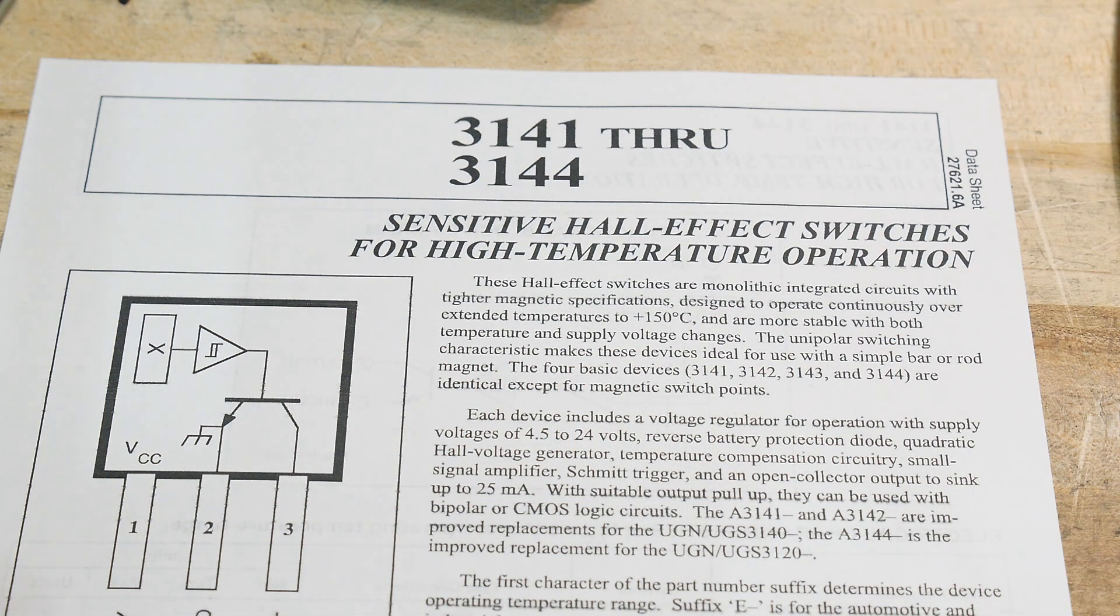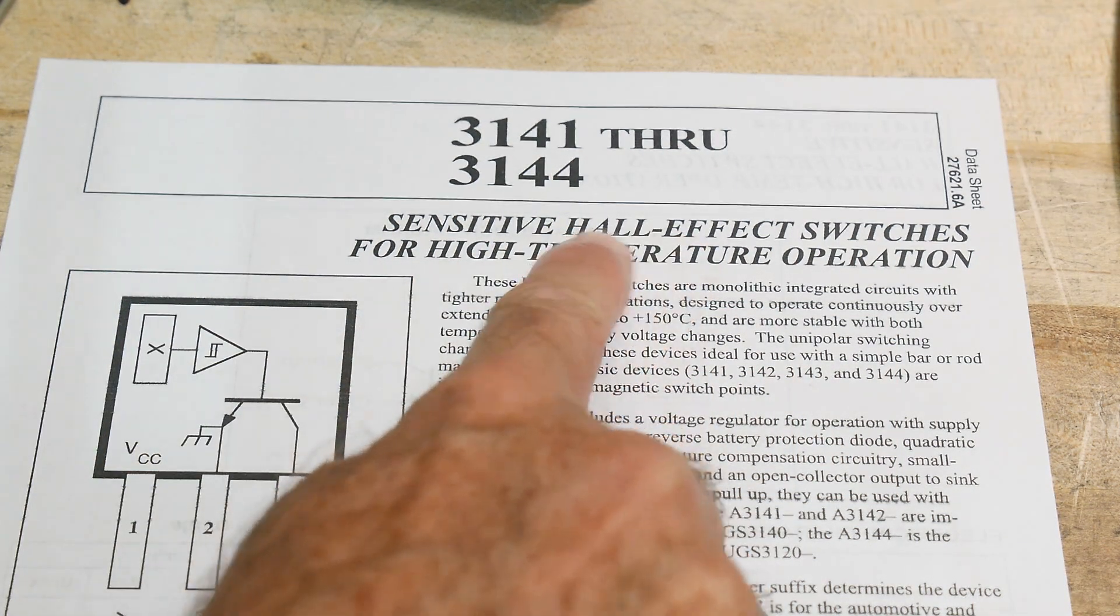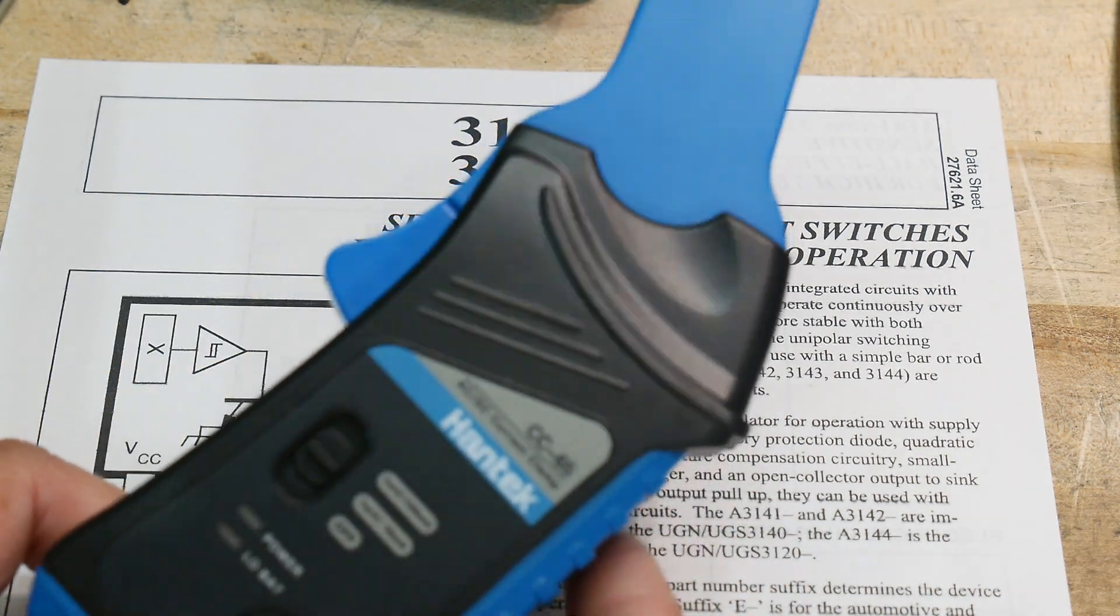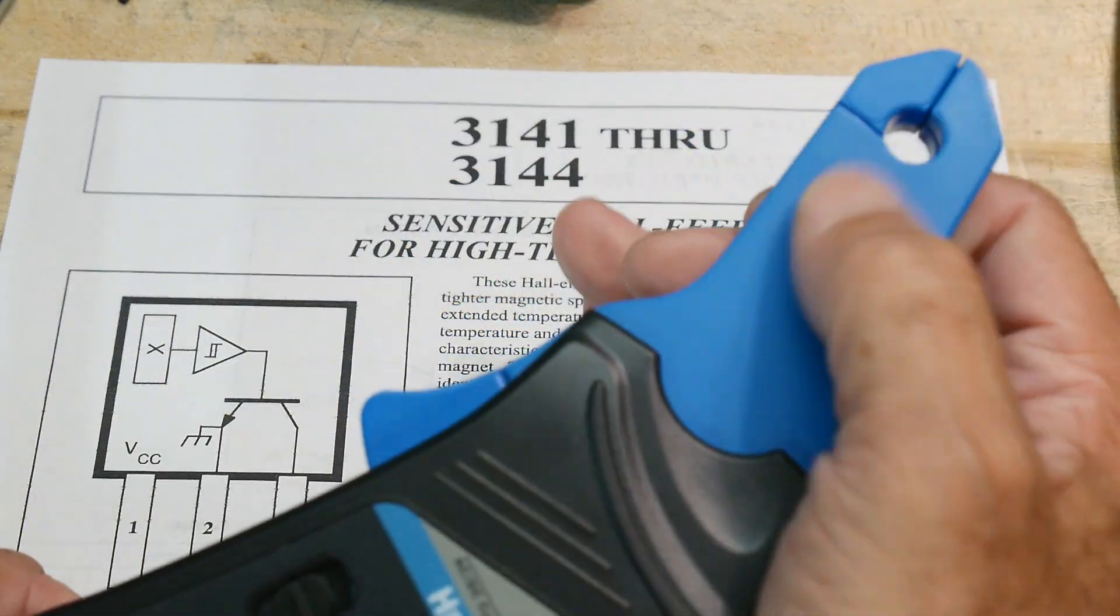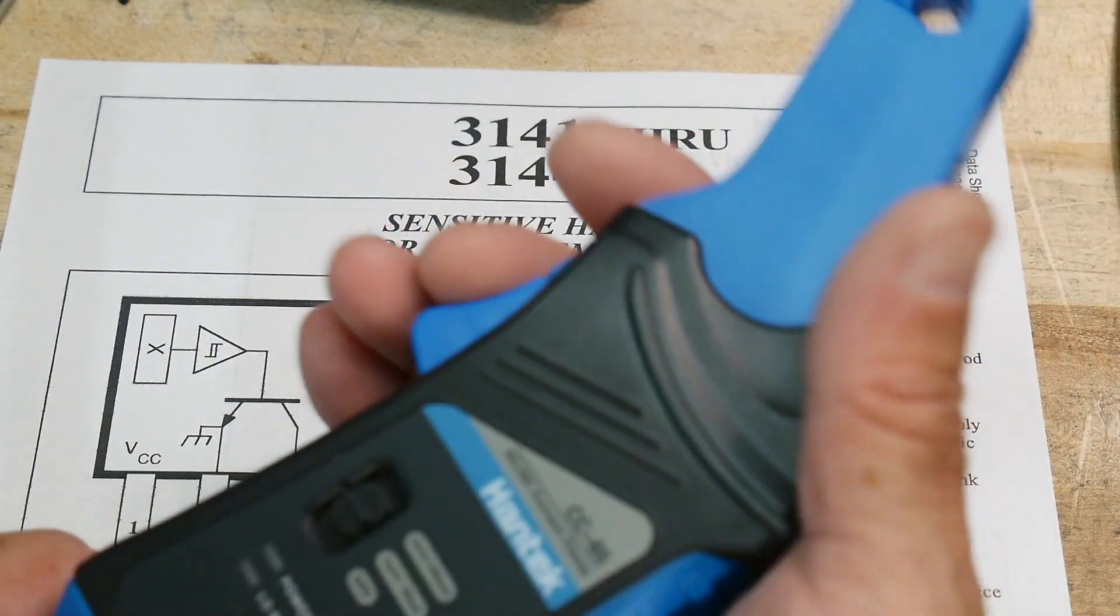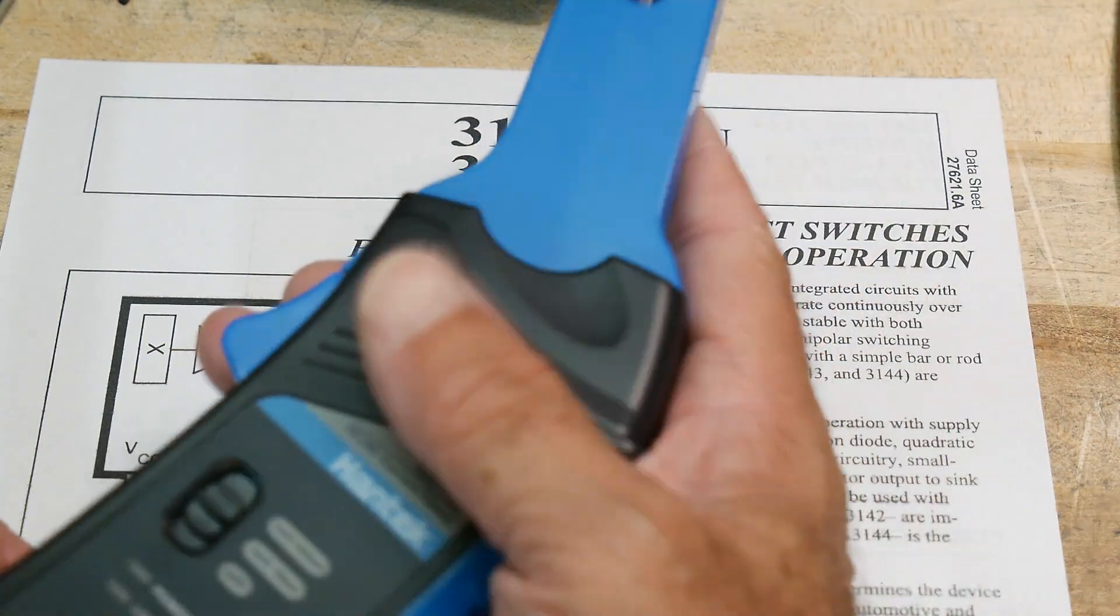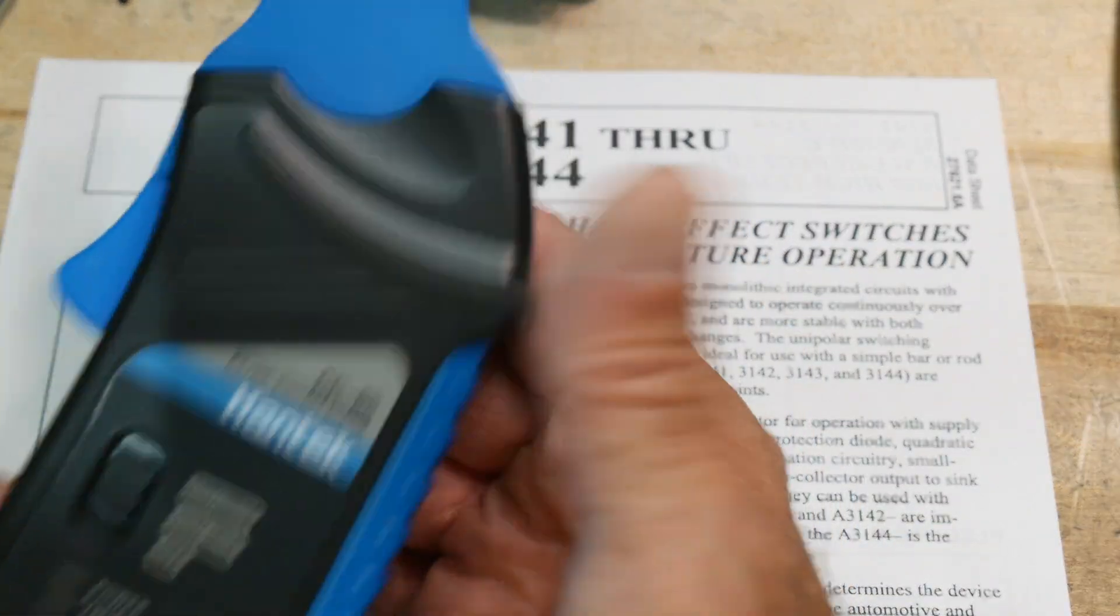All right, I want to talk about Hall effect sensors. The Hall effect, which is a way to measure magnetism. And I mentioned it once before, I have this clip-on ammeter, and it uses two Hall effect sensors in it to detect current. It measures the magnetic field and tells you what that is.